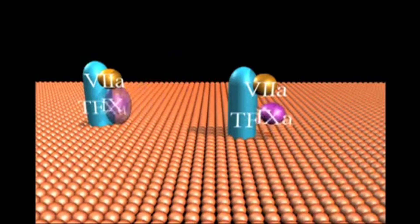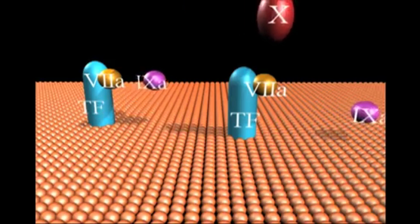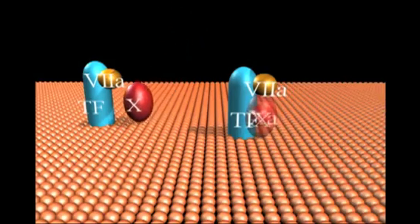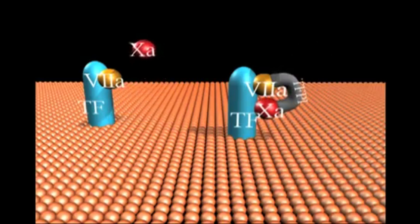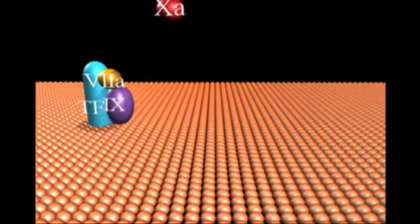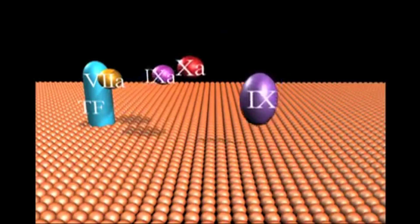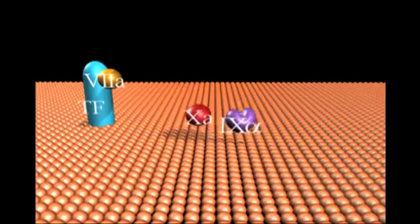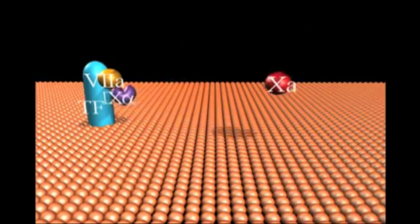Once produced, membrane-bound factor 10a can cleave one of the two sites, R152, required for factor 9 activation, producing the intermediate factor 9 alpha. Factor 9 alpha is rapidly converted to factor 9a by the TF factor 7a complex.